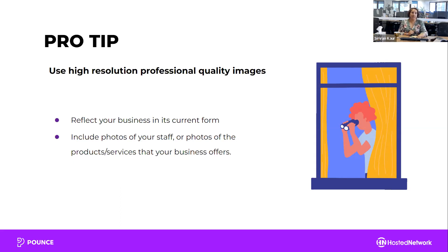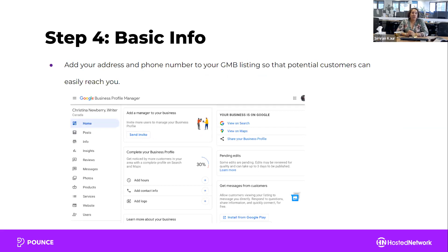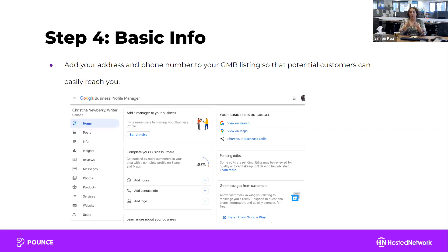The next thing is to make sure you set up all the basic information on your GMB listing — your office hours, contact information, and company logo. You've also got the ability to put a description of your business. Take the time to make sure this is all set up correctly so people can easily find you. Particularly if your business is service-based, during periods like Christmas when your office is closed, it's important to update the contact information on your GMB profile so it doesn't create a negative user experience.